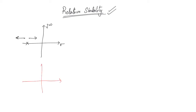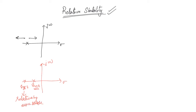Let us say you have two systems. One system has a root here — this is system one — and another system has a root here — this is system two. Now, you can say that since system two's root is further away from the j omega axis than system one, system two is relatively more stable. This is how you understand the relative stability of a control system.